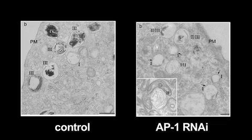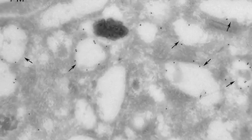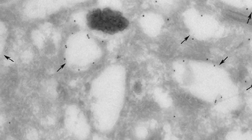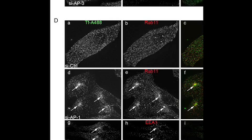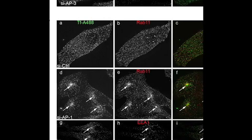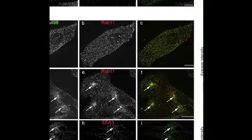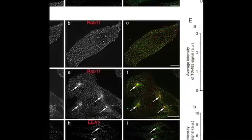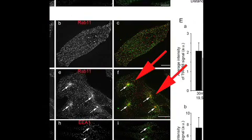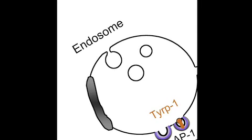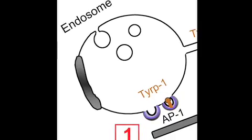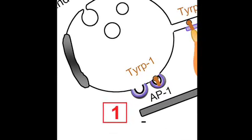De Lavoie began by depleting AP1 from melanocytes using RNAi. Cells lacking AP1 had decreased amounts of melanin and fewer mature melanosomes, corresponding with a failure to deliver the enzyme tyrosinase-related protein 1, which accumulated in endosomes instead. Moreover, the recycling endosomes that usually localise next to melanosomes in the cell periphery were redistributed to the pericentriolar region — where recycling endosomes are found in most other cell types. This suggested that AP1 has a dual role: it sorts cargo destined for melanosomes and positions endosomes nearby for easy delivery.